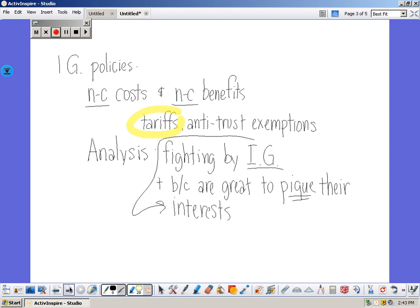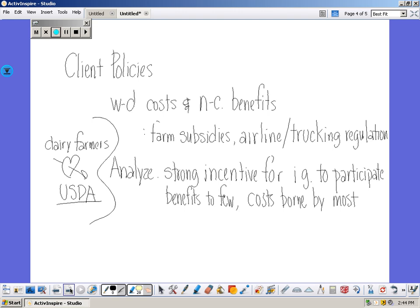The third type of policy is what we call client policies. These involve widely distributed costs and narrowly concentrated benefits. An example would be farm subsidies and airline and trucking regulations — all of these raise the cost for consumers, which is what we call widely distributed costs. Dairy farmers, for instance, are producing far more milk than can be consumed by 315 million Americans.